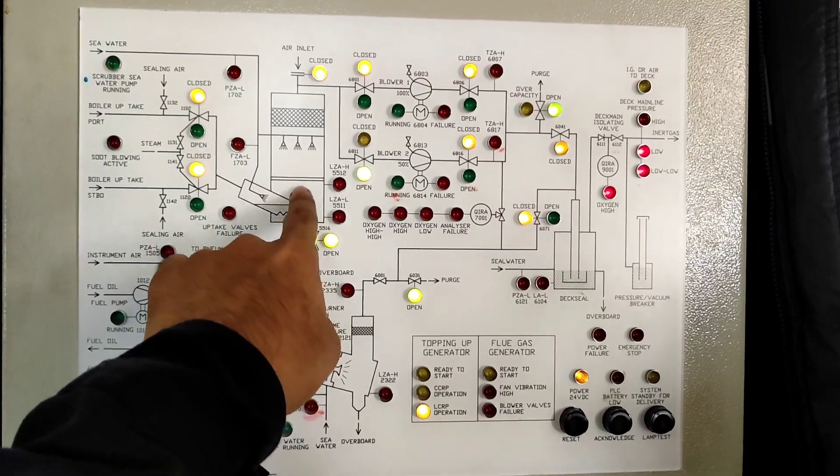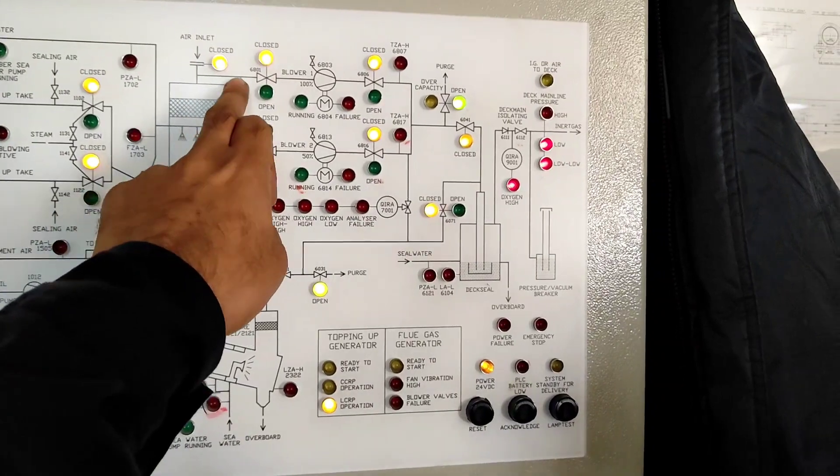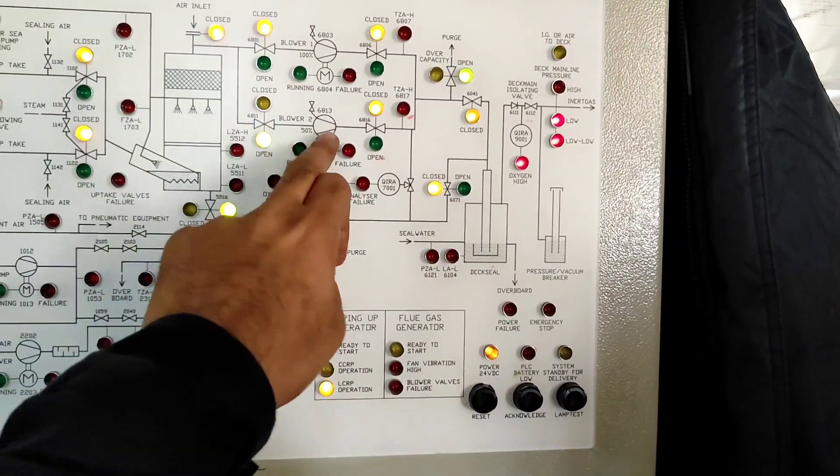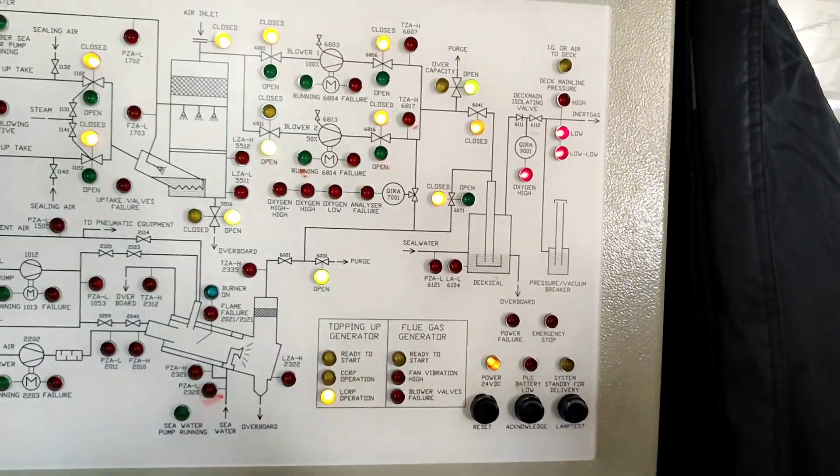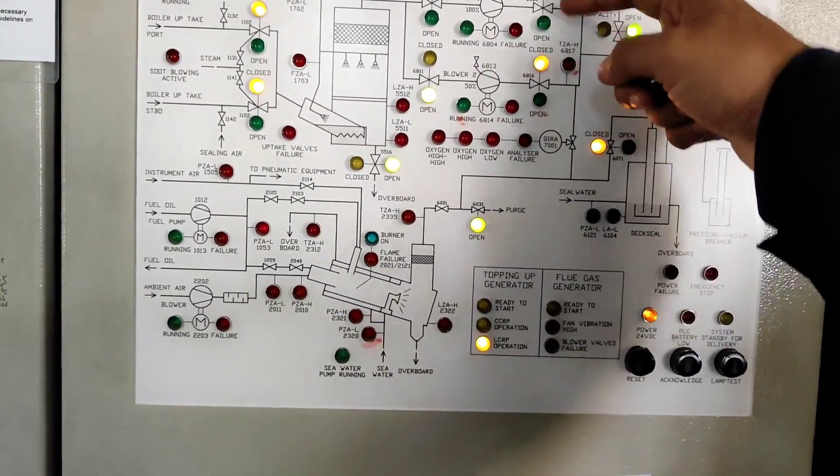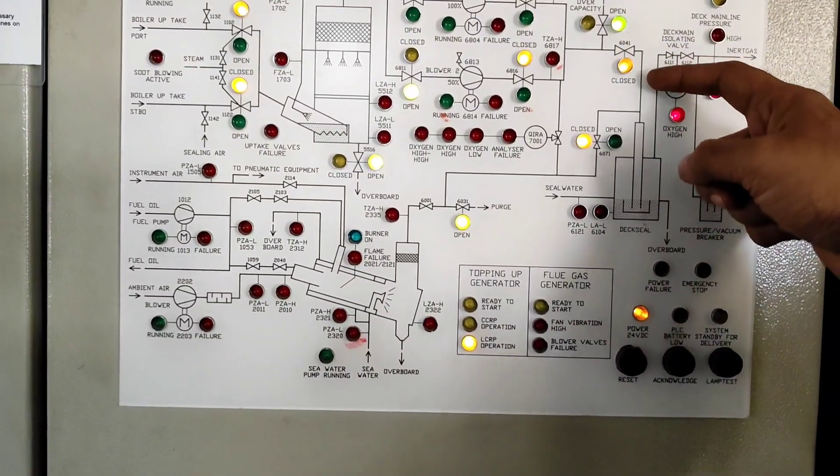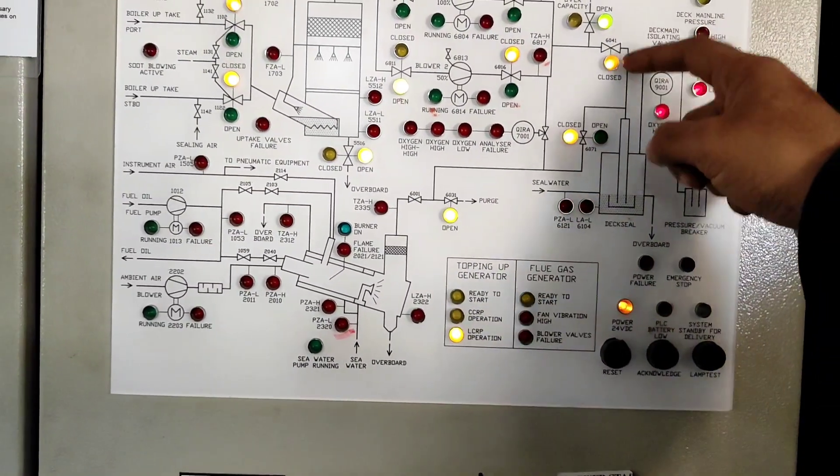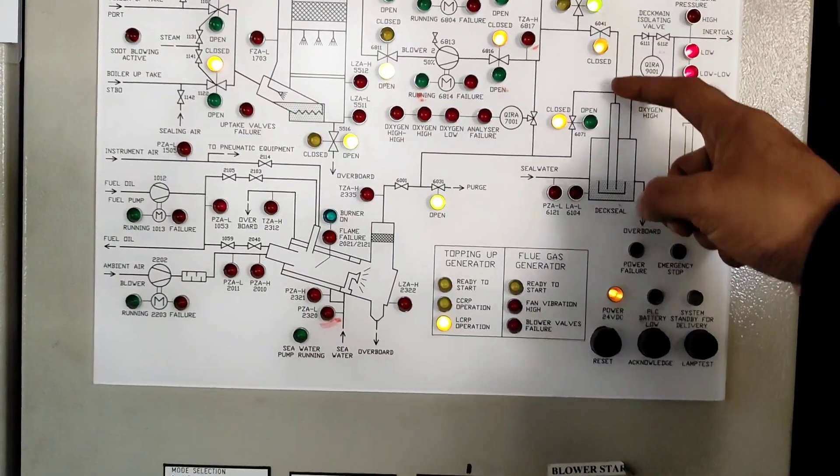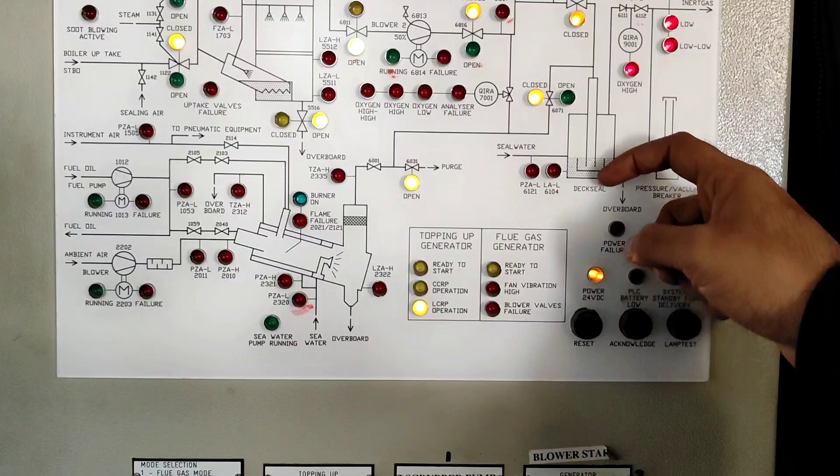Smoothing is going on with help of demister and water spray and then it goes to these blowers. You can see big blowers are there. So with this blower these walls, right now they are closed, they will be open and then it will go to your deck seal. You can see right now this is also close.